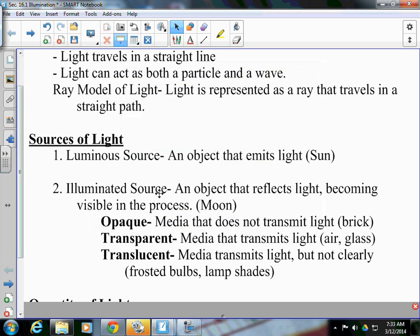Now, when we talk about light, there's three ways in which light can travel through something. Opaque, transparent, translucent. Opaque is a medium that does not transmit any light, such as brick. Transparent, a medium that transmits light, such as air or glass.